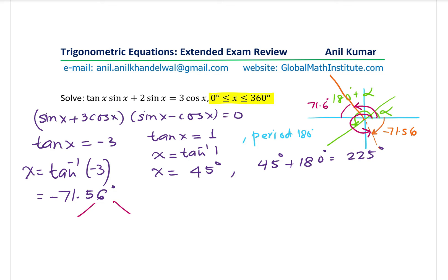So we get 180 minus 71.56. So that is 180 minus 71.56. I should have written 0.6 itself, which is 108.4. This is one.